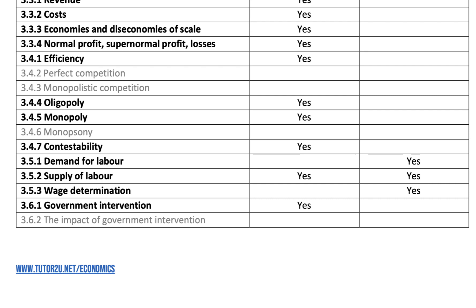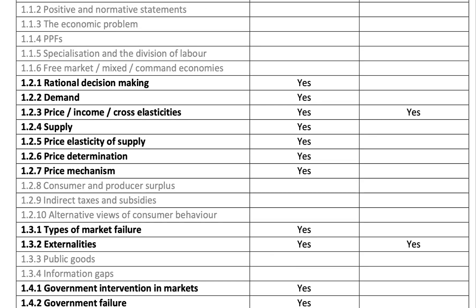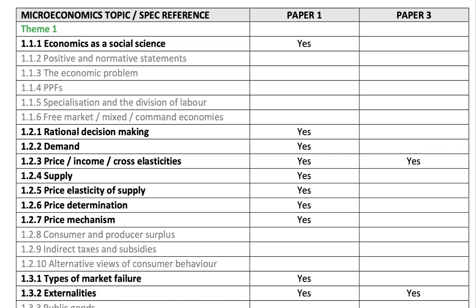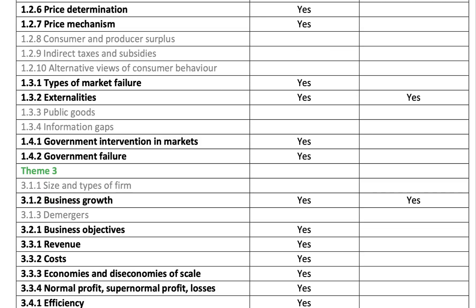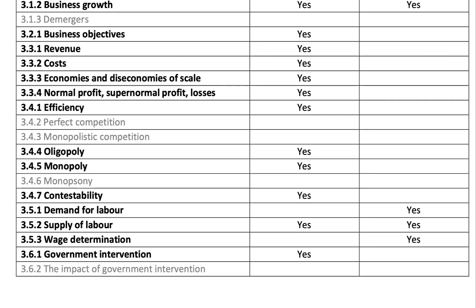Government intervention in the labour market and more generally in product markets is included in paper one, covering things like privatisation and nationalisation. They've taken out the impact of government intervention including regulatory failure. Just quickly thinking about micro for paper three: elasticities, externalities, business growth, and quite a bit of labour market economics will be important for paper three.